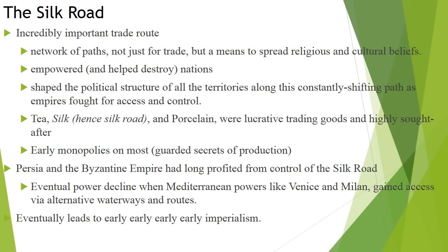There's fighting going on for these routes. If you can secure them and keep them safe, that's going to make you better off politically speaking versus people who have let the trail go by the wayside. We know the major early goods that are traded: tea, silk — hence the name — and porcelain. Those are coming from China to the west.